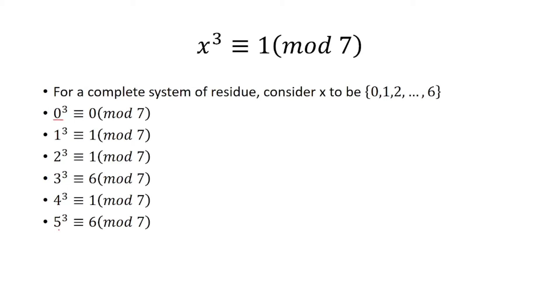5 cubed is 125. 125 divided by 7 gives me a remainder of 6. And finally, 6 cubed is equal to 216, and that leaves me a remainder of 6 when I divide it by 7.